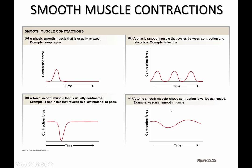A more tonic smooth muscle where you have variations in contraction force as needed is like vascular smooth muscle. In this case, the tone is relatively high and never really becomes completely relaxed, but it oscillates between a high contraction tone and a lower contraction tone, which helps to regulate blood flow as it moves through the arteries.